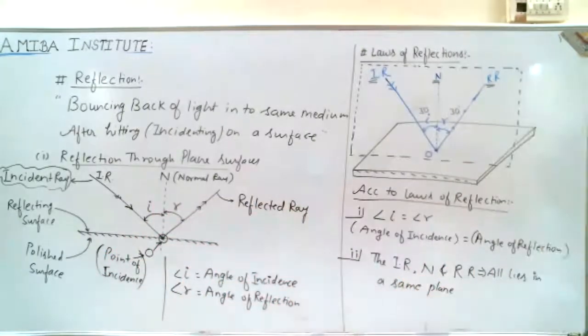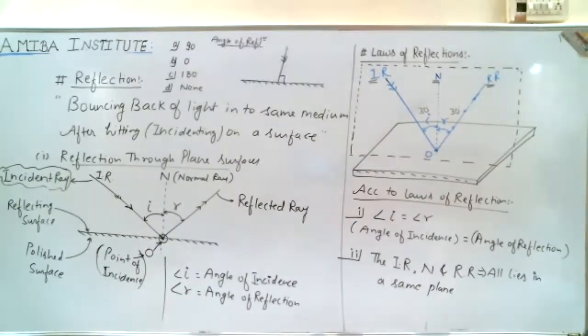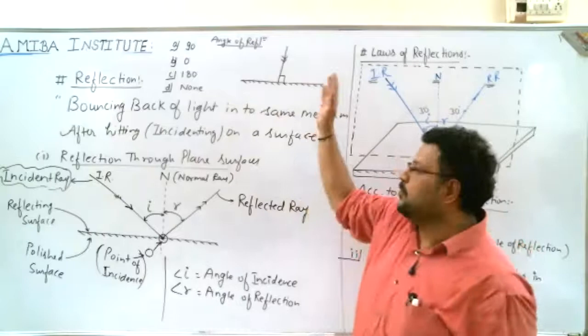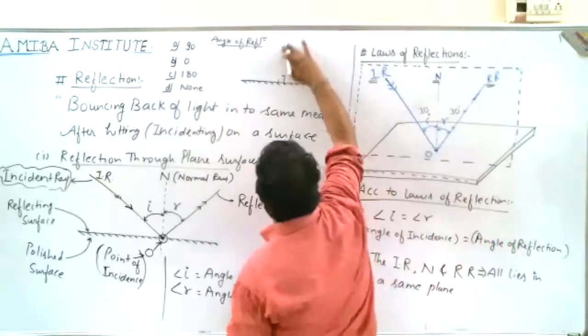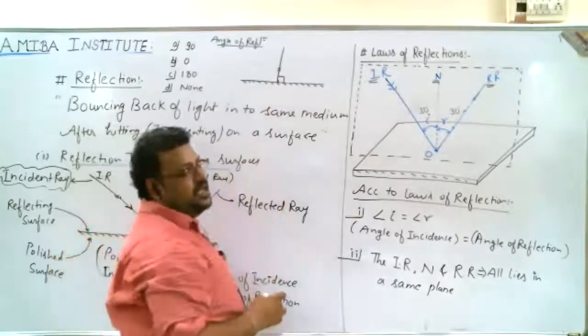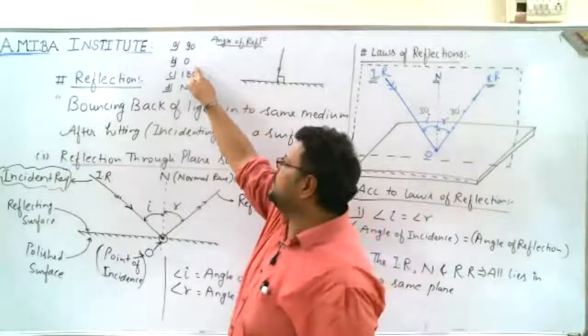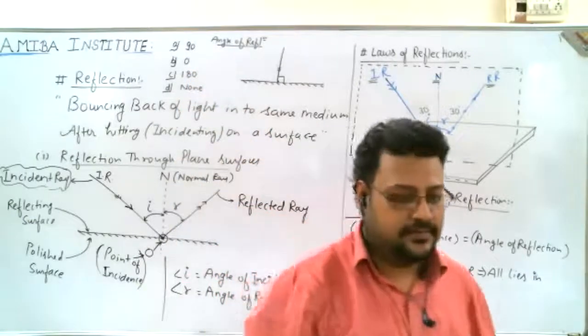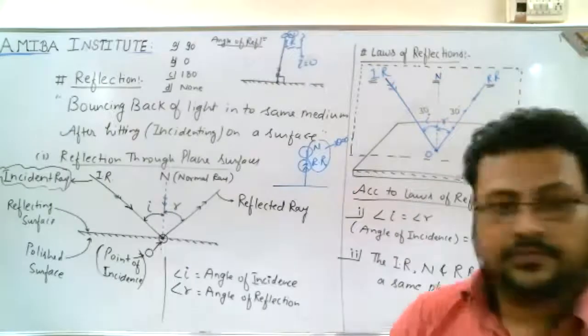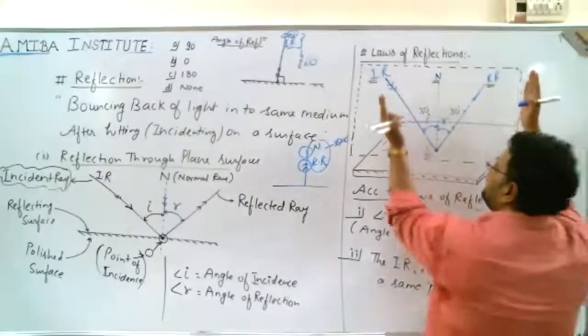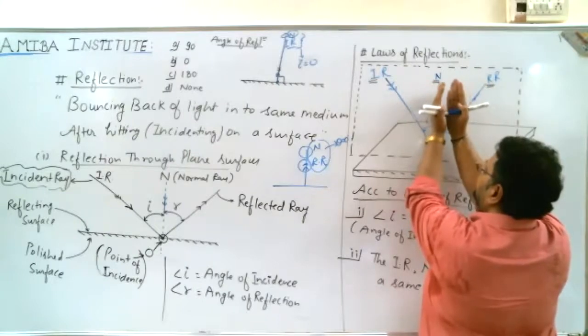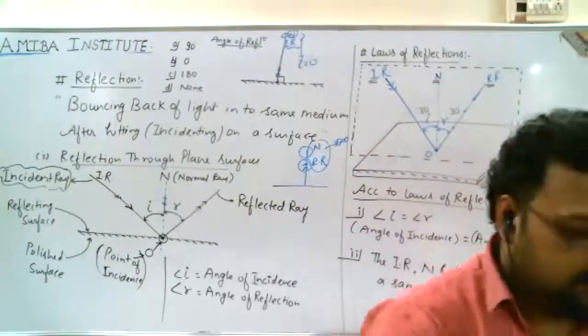How many of you learned the laws of reflection? Now my question is, if there is an incident ray which is 90 degrees from the surface, what will be the angle of reflection? Option A: 90 degrees, B: 0 degrees, C: 180 degrees, D: none. The answer is 0 degrees.